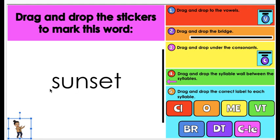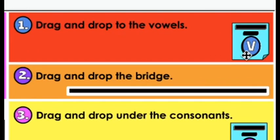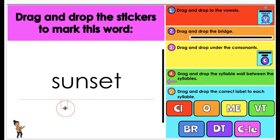Okay? So here's sunset. And I'm going to start first by labeling the vowels. So I see the vowel U here and I see the vowel E here. So I'm going to go to step one where it says drag and drop to the vowels. So I have labeled my vowels.